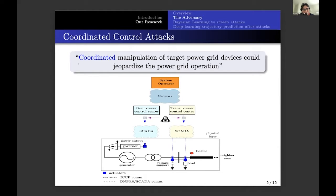And in particular, we are interested in stopping coordinated control attacks. The attack against the Ukrainian power grid was a coordinated control attack. By coordinated, we mean the manipulation of multiple power grid devices in order to jeopardize the power grid operation. In the figure that you're seeing there, for example, we are assuming the adversary has reached the SCADA system of generator owners and transmission owner operators, and they are ready to either operate the generators, they're going to disrupt the power output of the generators, or they're going to open a transmission line, like what happened in Ukraine.